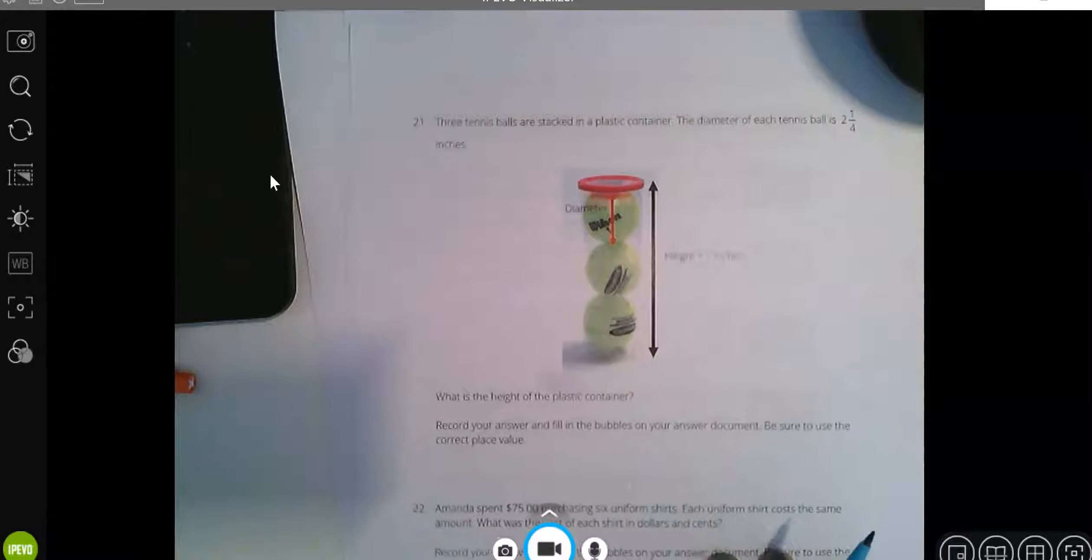All right, our last chunk of multiple choice problems starting with number 21. Three tennis balls are stacked in a plastic container. The diameter of each tennis ball is two and one fourth inches. What is the height of the plastic container?